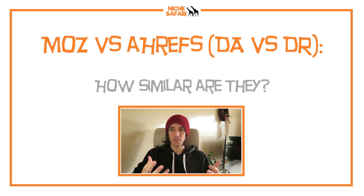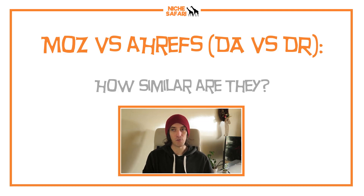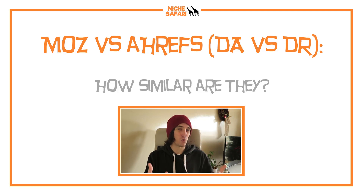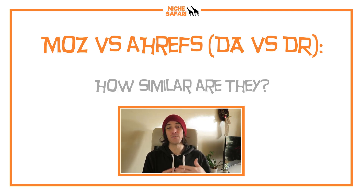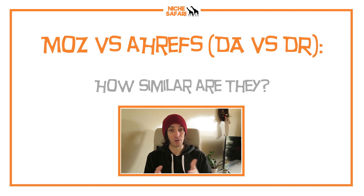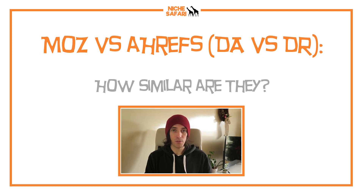The two metrics are made up by Moz and Ahrefs — Google never made these metrics themselves. But they are designed to reverse-engineer the Google algorithm and decide, on a spectrum from 0 to 100, where a website sits in the eyes of Google in terms of its authority. There are a lot of metrics that go into DA and DR, but backlinks is one of the major ones, because according to Moz and Ahrefs the Google algorithm still weights backlinks very highly.